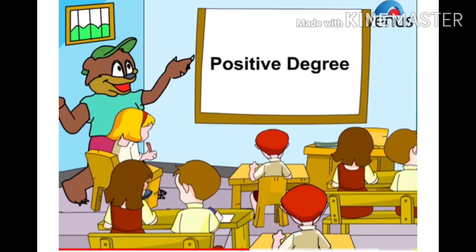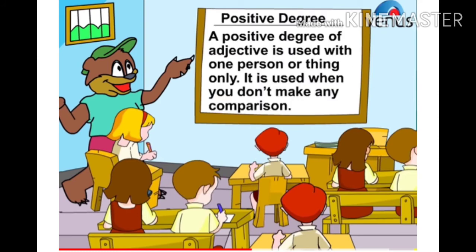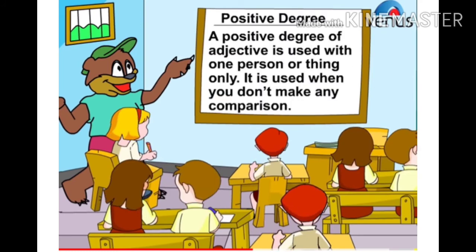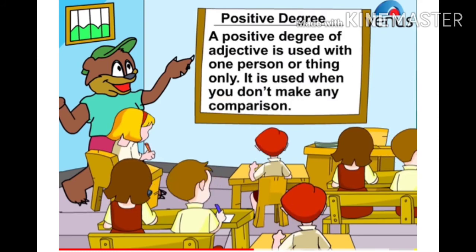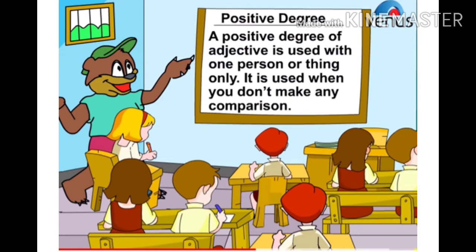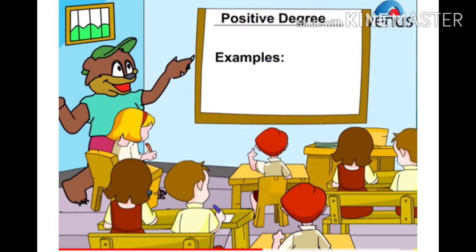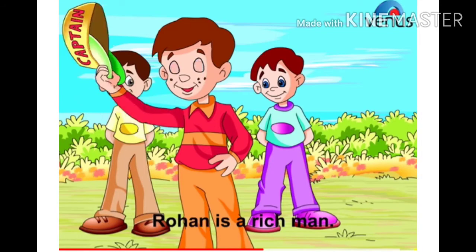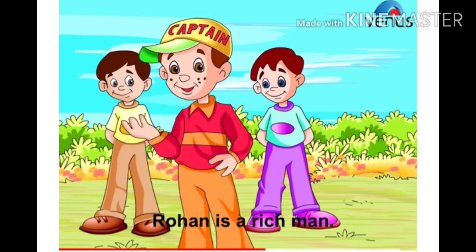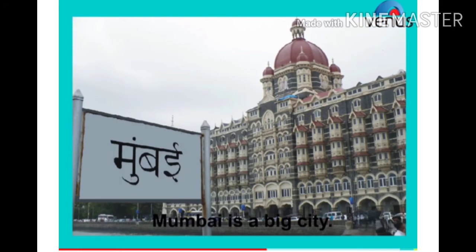Positive degree: A positive degree of adjective is used with one person or thing only. It is used when you don't make any comparison. Examples: Rohan is a rich man. Mumbai is a big city.